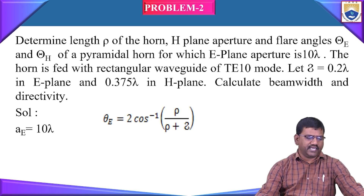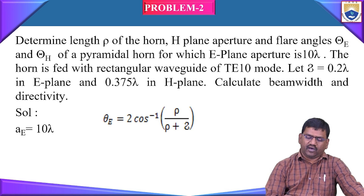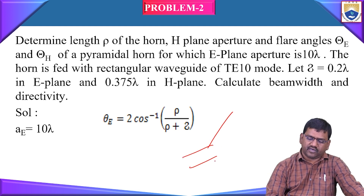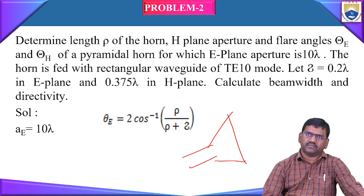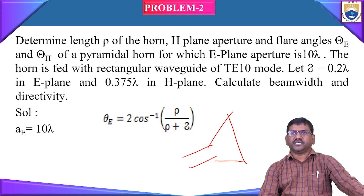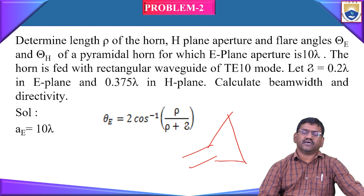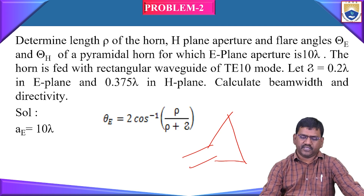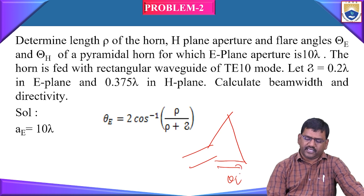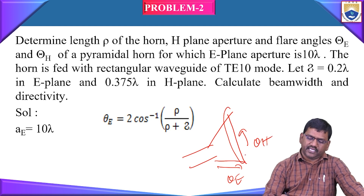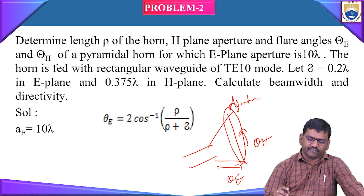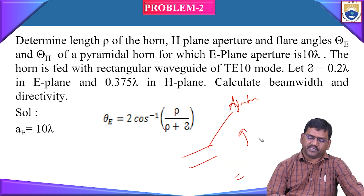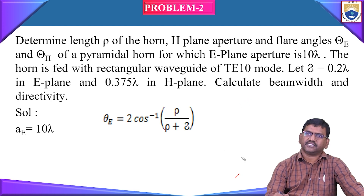We need to calculate the beam width and the directivity. Here we know that this is the design of the horn antenna. Depending upon the structure of the horn antenna, the electric plane and the magnetic plane — E-plane and H-plane — will vary. Let us assume this as the E-plane and this as the H-plane. Theta_h value and this total area we call it as an aperture.